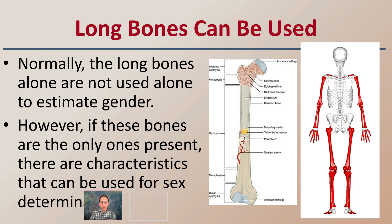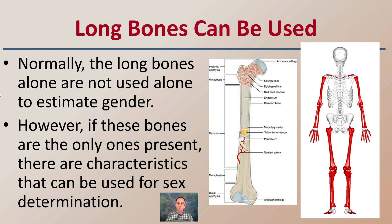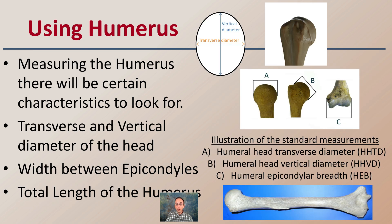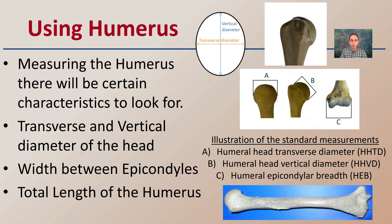We can also use some of the long bones. Normally, long bones alone are not used to estimate gender; however, if these are the only bones present, there are characteristics that can be used for sex determination. If that's all you're given, we can make some inferences. Using the humerus in particular, we look at measuring the transverse and vertical diameter of the head region — where it articulates the upper arm — the width between the epicondyles, and the total length of the humerus to help classify whether it originated from a male or female individual.